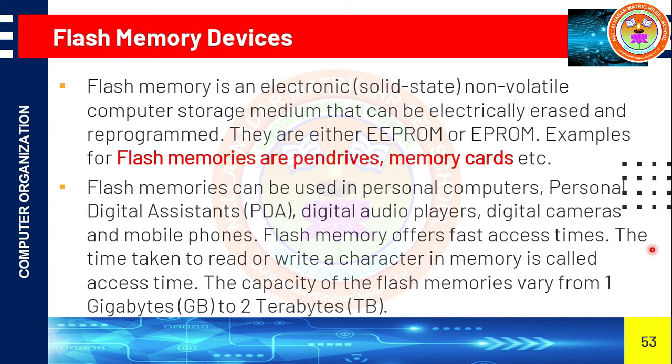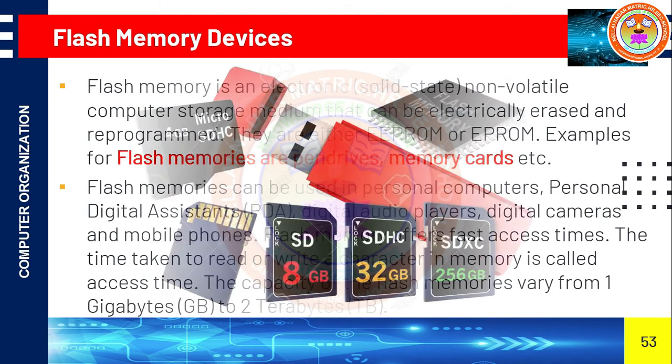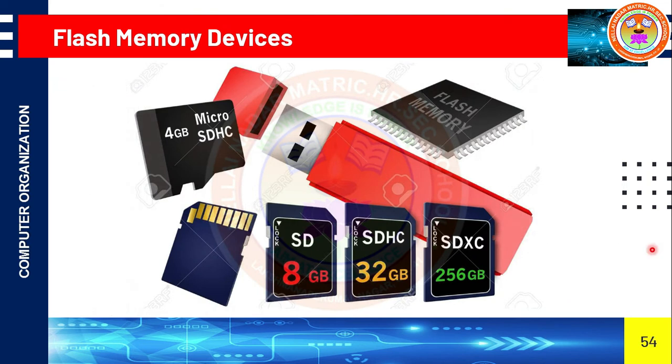Flash memory offers fast access times compared to DVD and CD — data can be read or processed very quickly. The time taken to read or write data in memory is called access time. The capacity of flash memory devices varies from 1 gigabyte to 2 terabytes. The best examples are pen drives or USB and memory cards. USB stands for Universal Serial Bus. These are the pictorial representations of both USB and memory card.